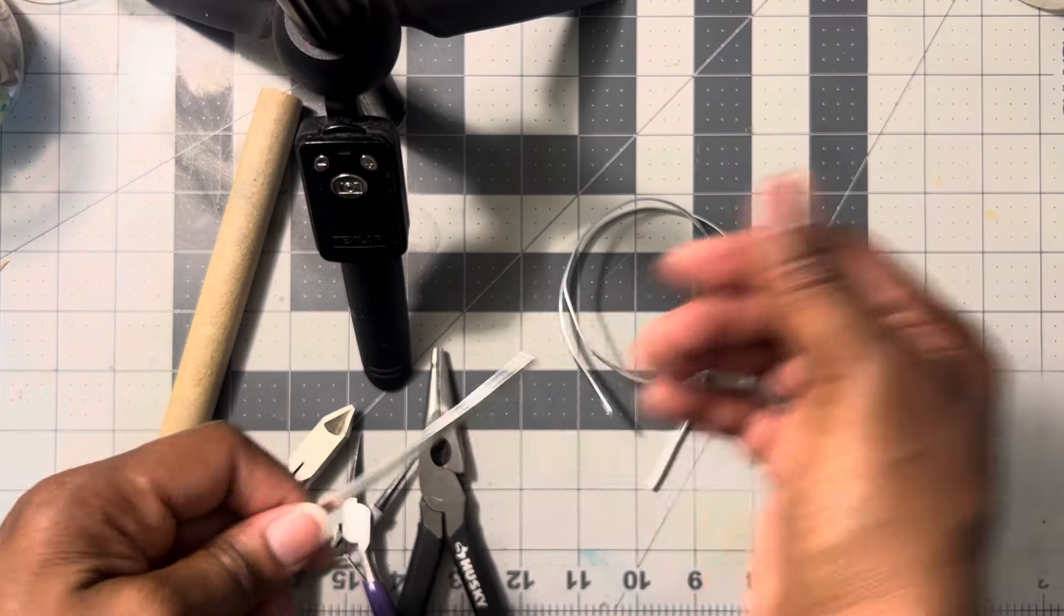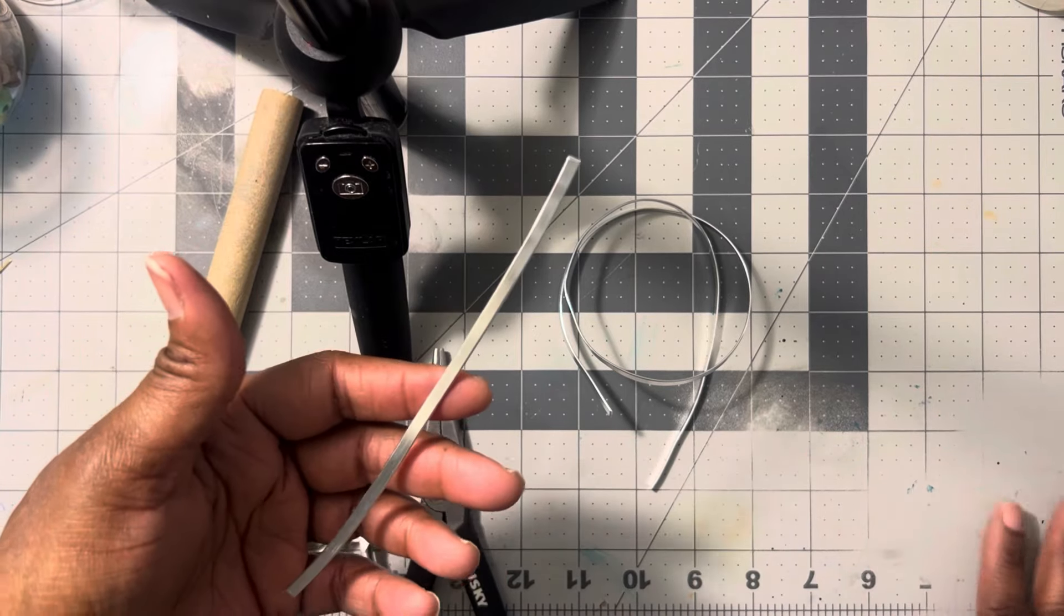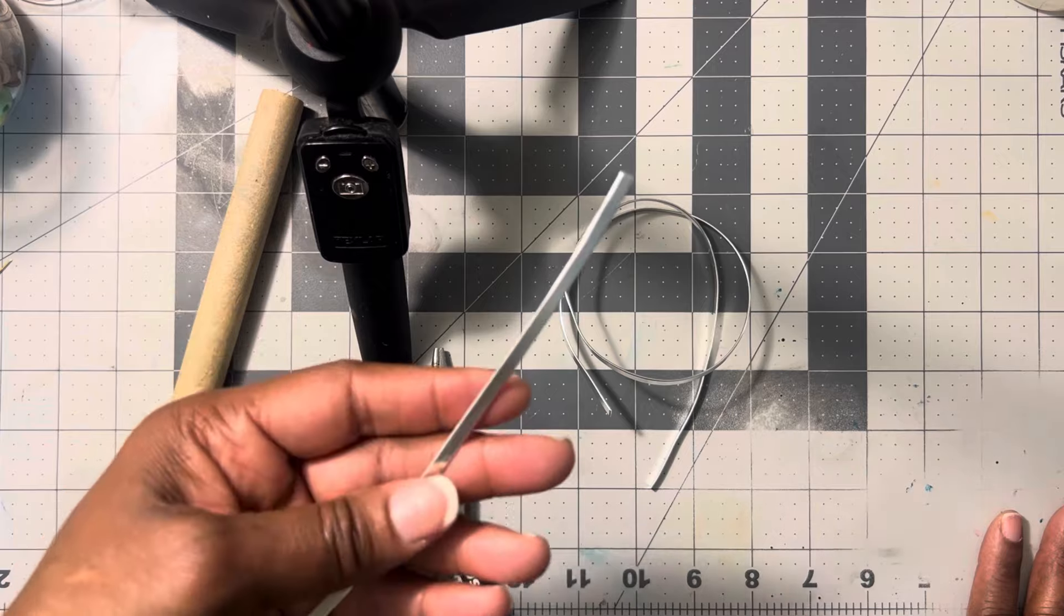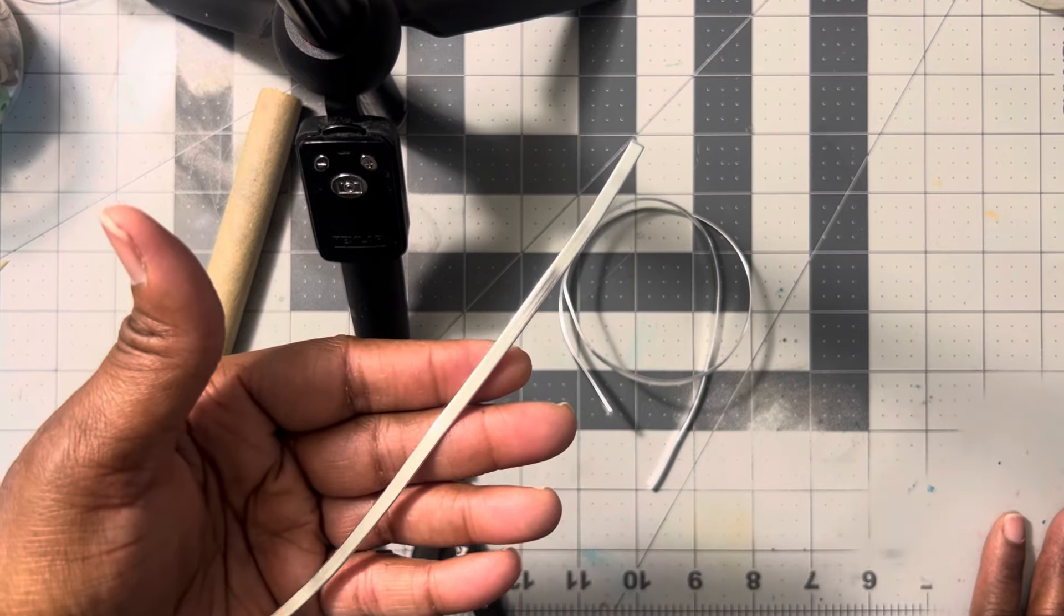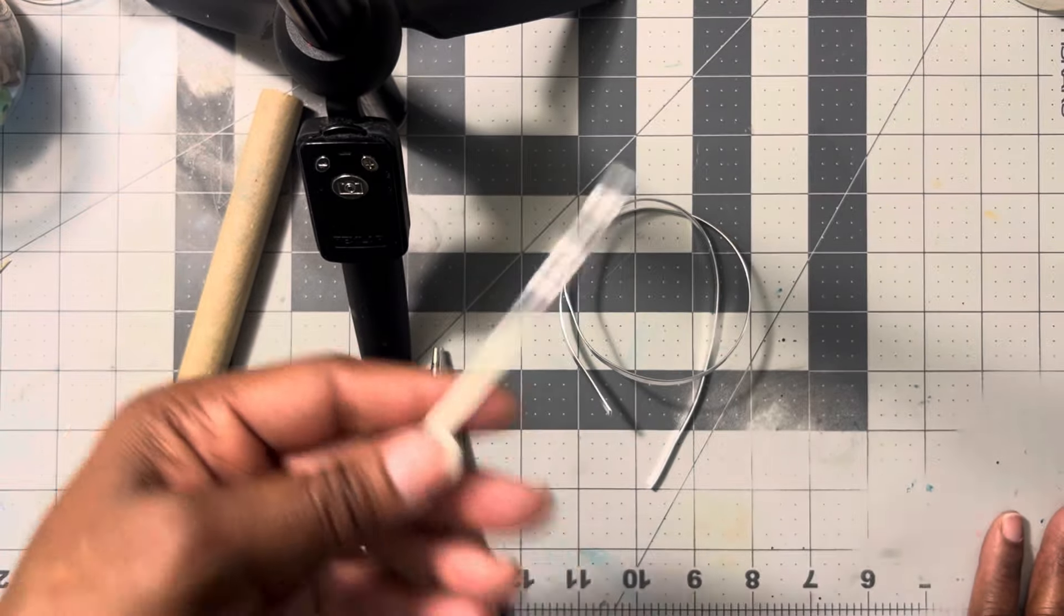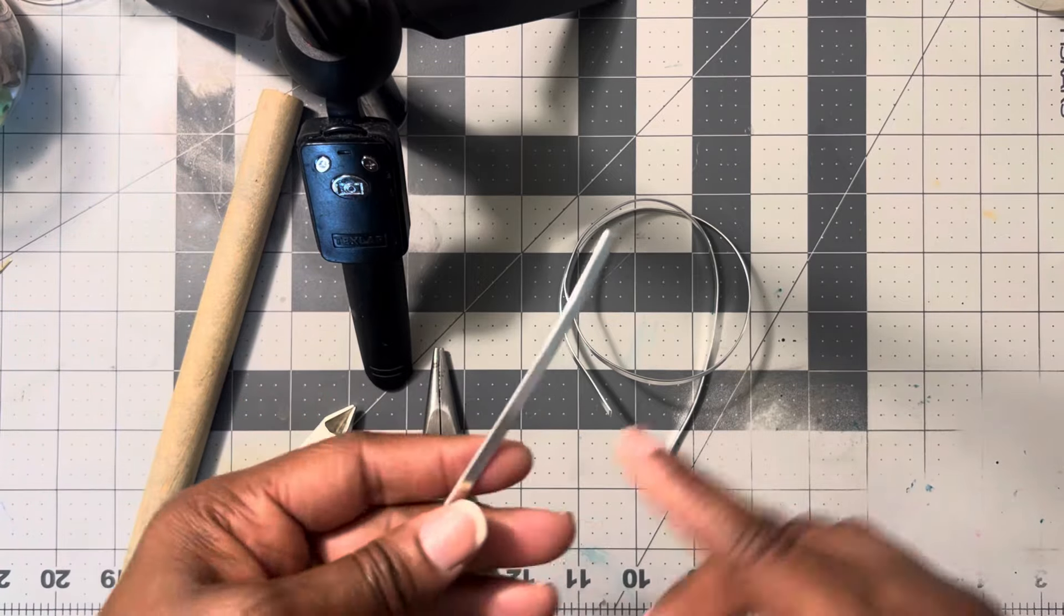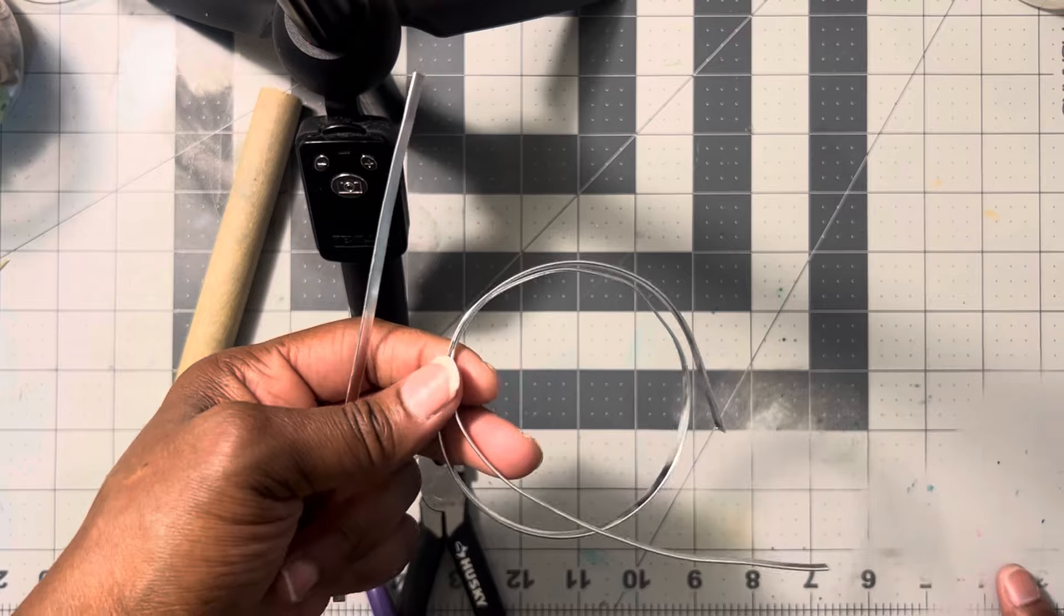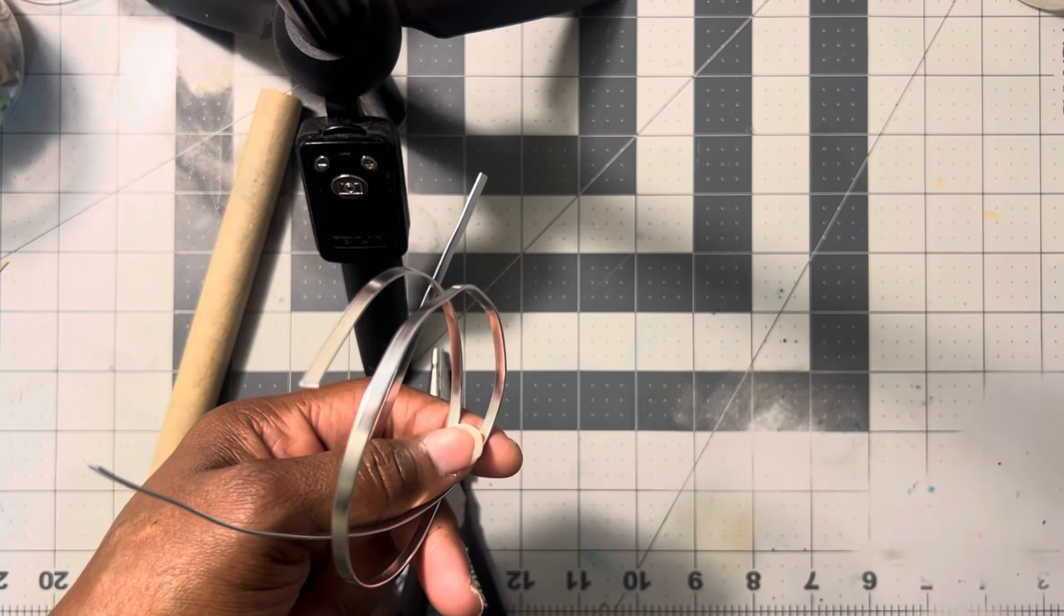This is a flat aluminum wire that I purchased from Michael's. Hobby Lobby and Joanne Fabrics does not sell this. You may be able to find this online, and I was just letting y'all know that so that you don't go out to those stores and try to find this. You can find it at Michael's when they have it in. They have it in silver, they have it in gold, and they have it in like a copper color.